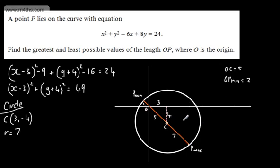We know that the length of the radius is going to be 7. So we can say at this stage that OP max is going to be equal to 5 plus the 7. So we can say that OP max will be equal to 12. So we've got a maximum distance of 12 and a minimum distance of 2.